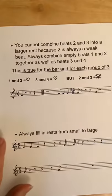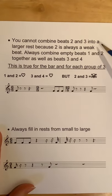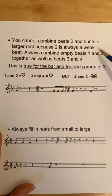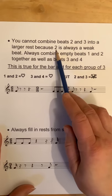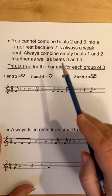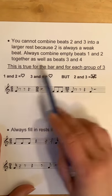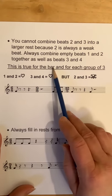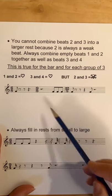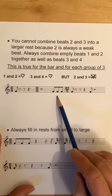Now we still have this wonderful rule, and it's so important: you cannot combine beats two and three into a larger rest, because two is always a weak beat. Strong, weak, medium, weak — two is always weak. You can always combine empty beats one and two together, as well as empty beats three and four. This is true for the bar and for each grouping of three, because now we're working in units of three.